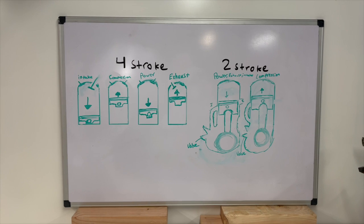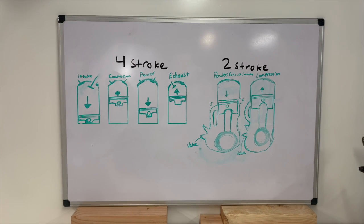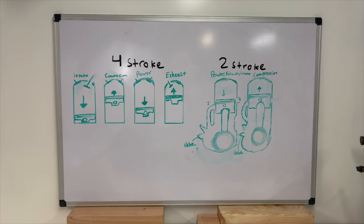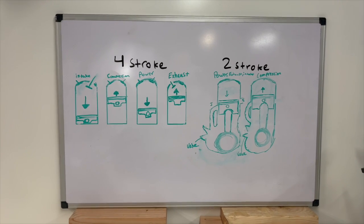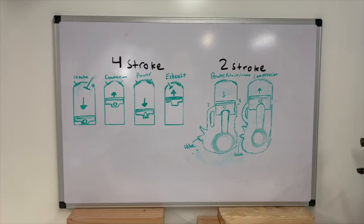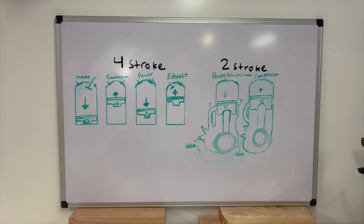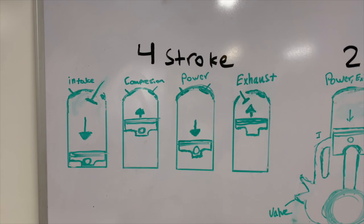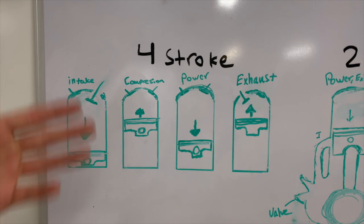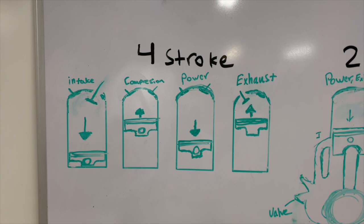What I have laid out here is a diagram of the four stroke and two stroke engines. I wanted to start off basic and just explain the differences on a whiteboard so you guys could see the internals of them. Now looking at the four stroke engine, I've laid out all four of the different strokes and I'm going to go over what happens in each of these strokes and how it's going to be different from the two stroke engine.